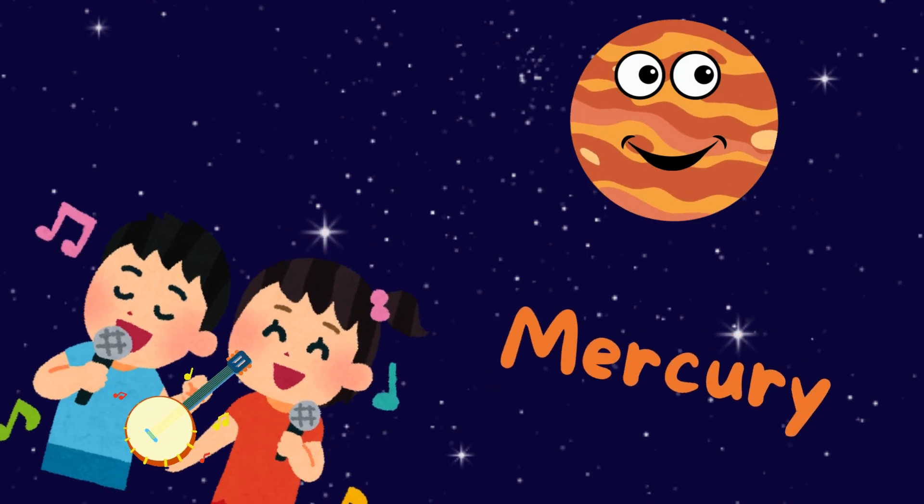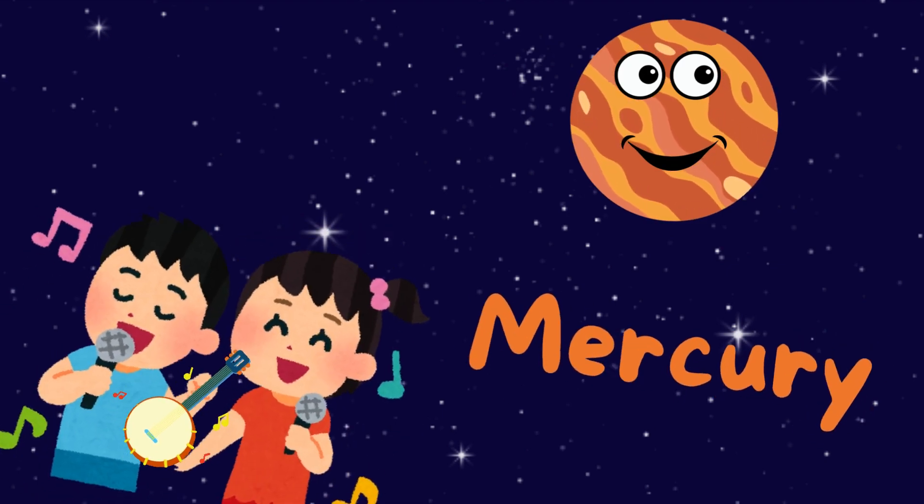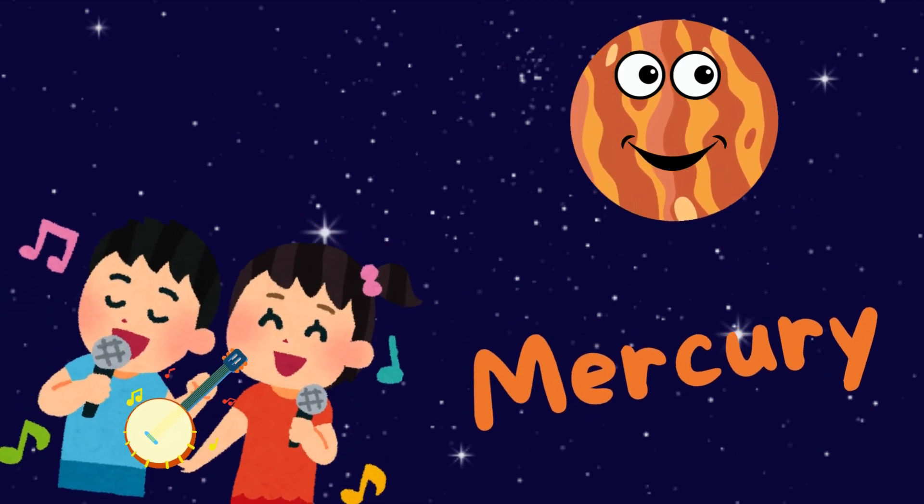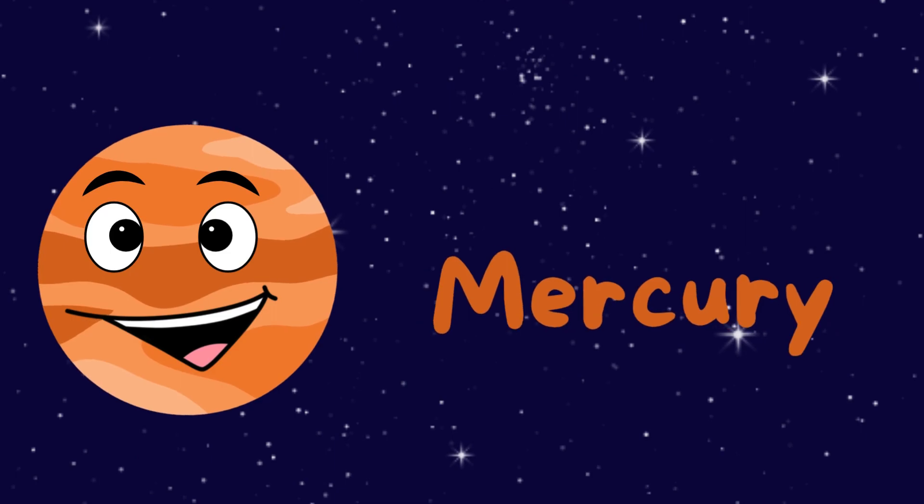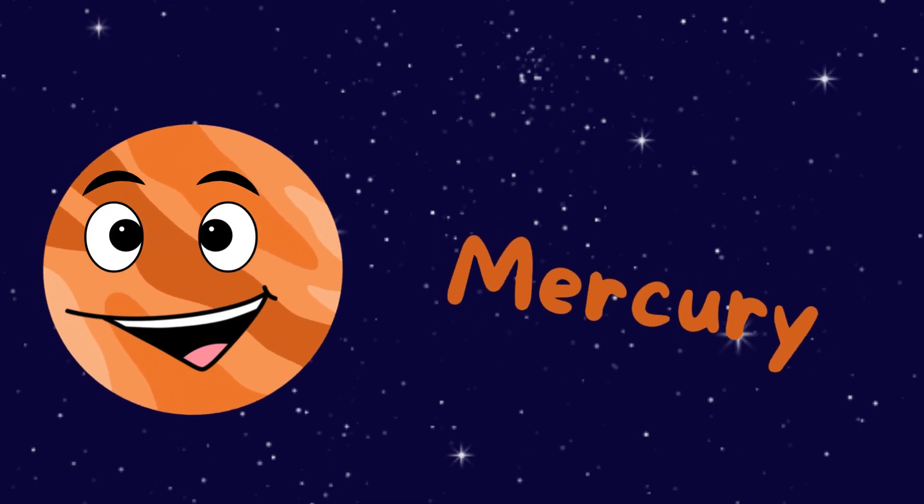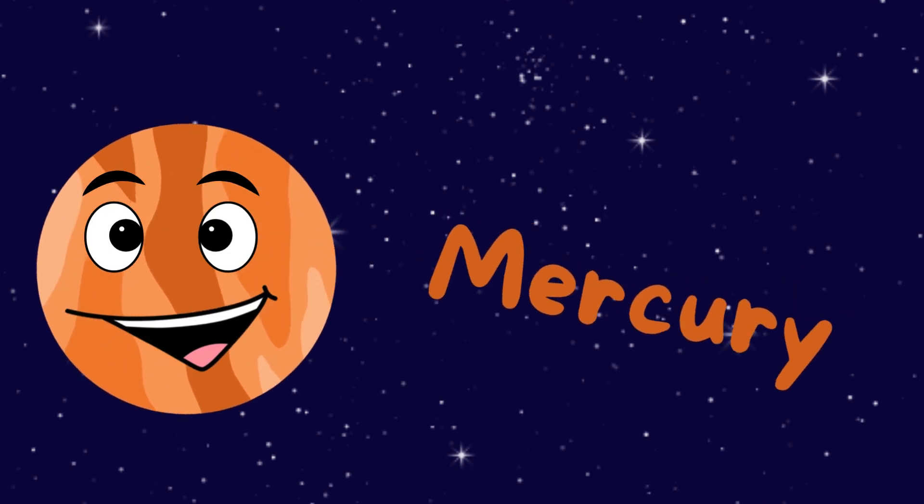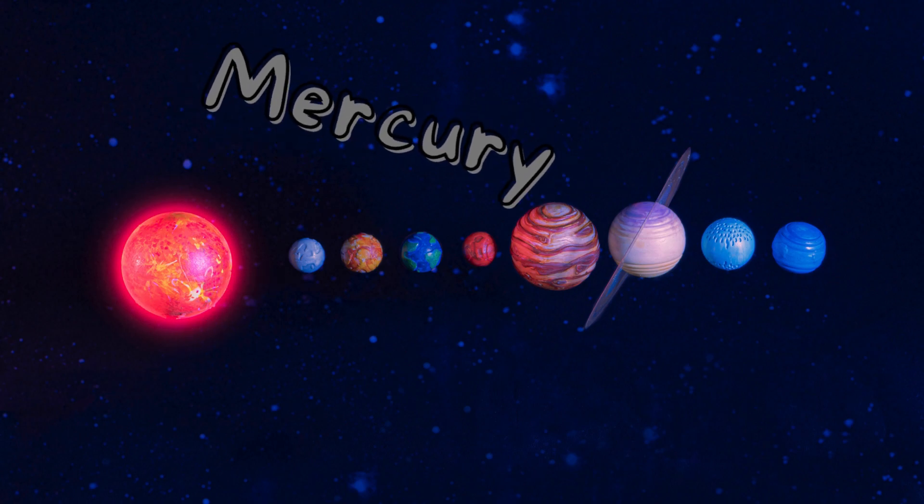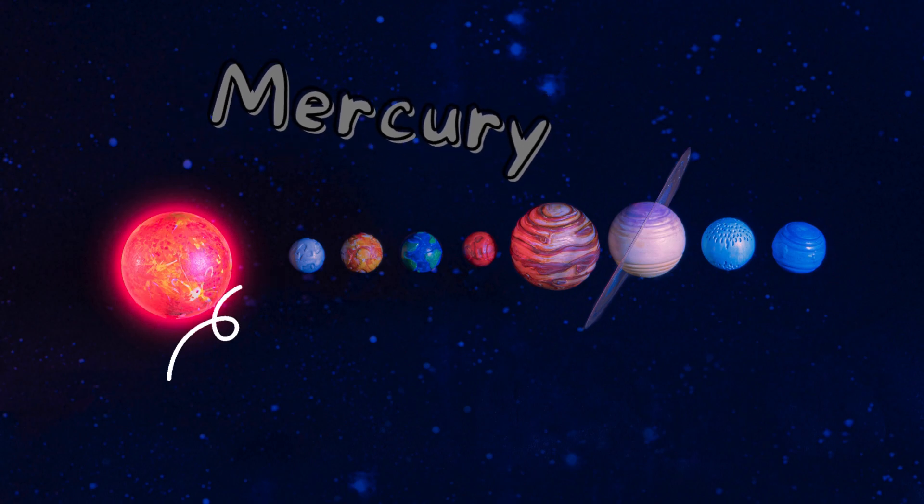Hey there kids, let's have some fun. I'll tell you about planet number one. It's called Mercury, it's shiny and bright. Let's learn all about it, day and night. Mercury's the closest to the sun.